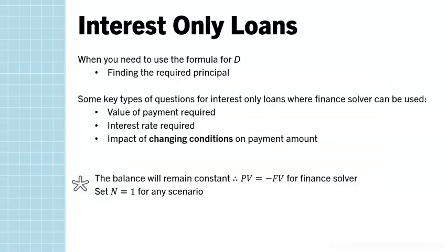A couple of other key things to remember before we move on to examples. When you need to find D or the principal, it is much easier to use the formula for the D value. Finance Solver is useful if you're asked to find the payment required, the interest rate given other aspects of the loan, or to look at the impact of changing conditions.